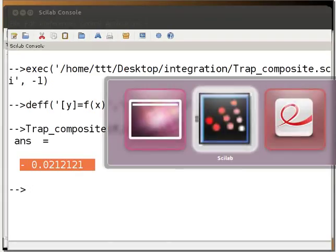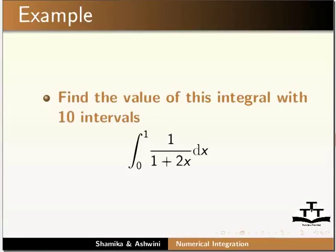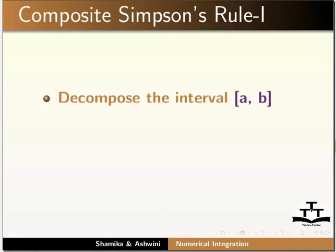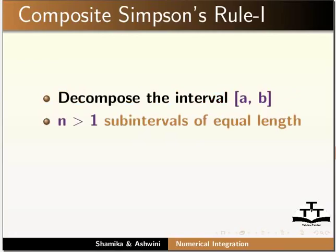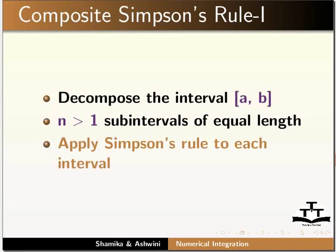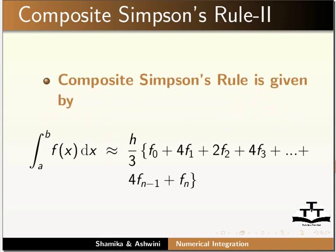Next, we shall study the composite Simpson's rule. In this rule, we decompose the interval [a, b] into n > 1 sub-intervals of equal length. Applying Simpson's rule to each interval, we get the value of the integral as h/3 multiplied by the sum of f0, 4*f1, 2*f2, ... to fn.